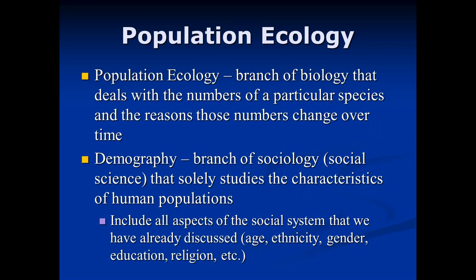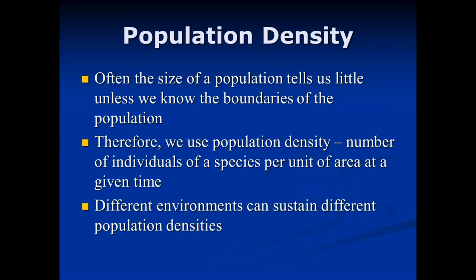Today we're really concerned with the characteristics of human populations and why our numbers have been dramatically increasing over time. When we look at any species, pure numbers tell us very little. Instead, what we want to know is population density — the number of individuals of a particular species within a bounded given area, such as coyotes, desert tortoises, or black widow spiders within the Las Vegas Valley.